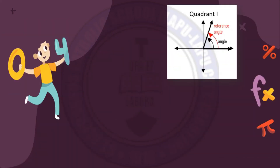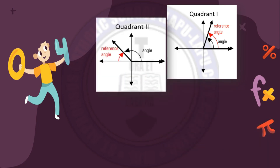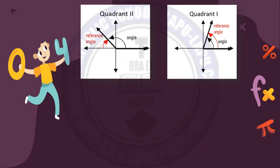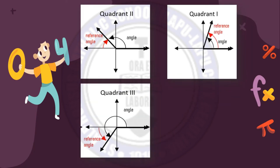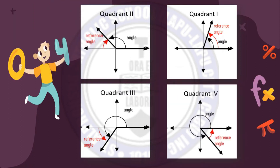In the figure: in quadrant 1, the given angle and the reference angle are the same. In quadrant 2, the reference angle is close to the x-axis. Similarly for quadrant 3 and quadrant 4.